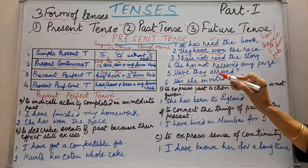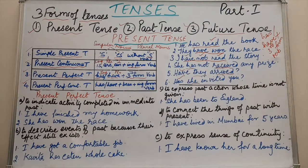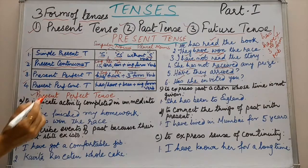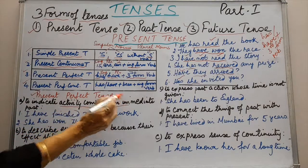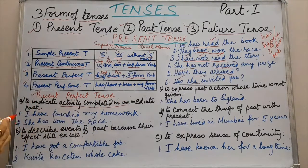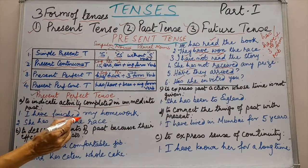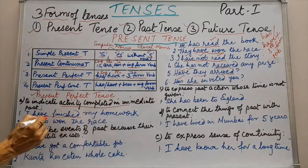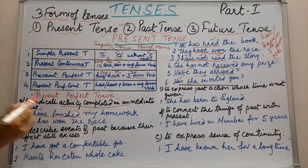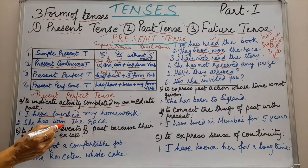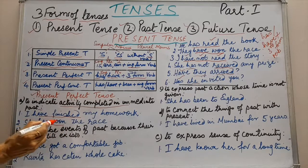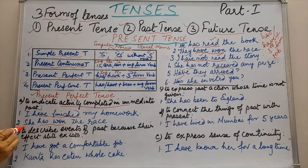Let us see the situations in which present perfect tense is used. First, to indicate activity completed in the immediate past. Example: I have finished my homework — this activity is over, have plus third form of verb. She has won the race — has plus third form of verb, and she has already won the race. So present perfect tense is used.